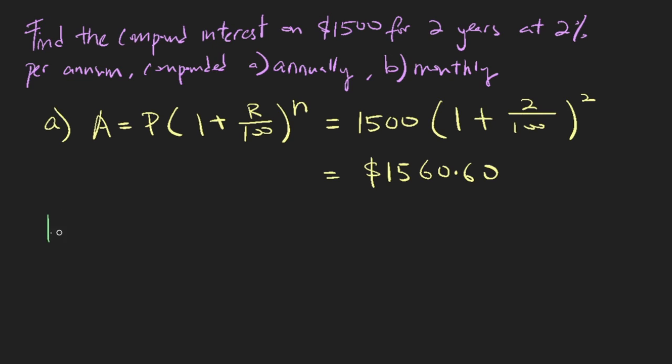Now for part B, it's the same question, but this time around, the amount of money is compounded monthly. So this is the same formula. 2% interest would mean that every month, it will be compounded by 0.1667%.